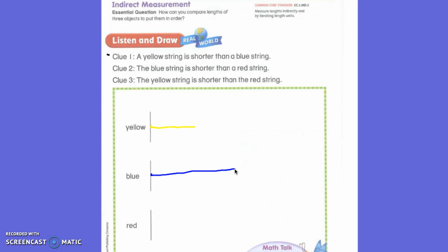Now let's read clue number 2. The blue string is shorter than a red string. So how should we draw our red string?